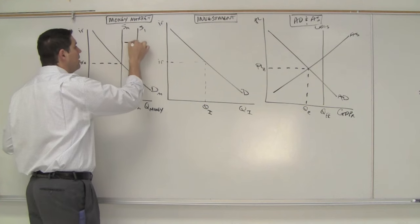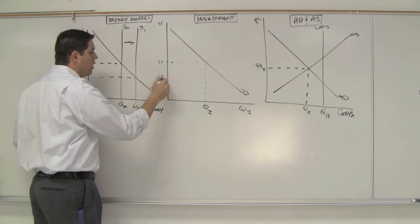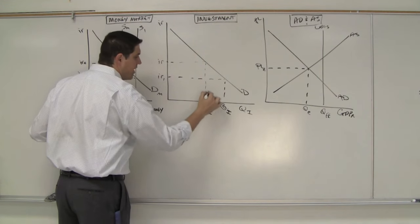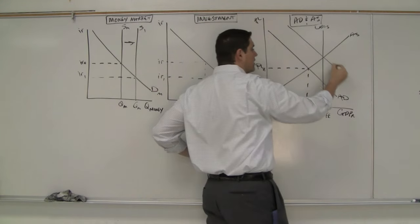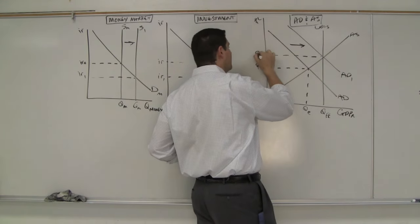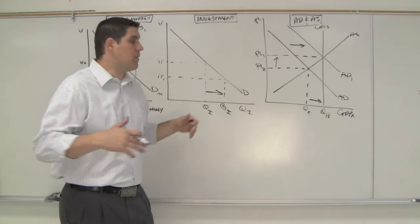Increase in money supply would lower interest rates. So we'll call this interest rate one. Interest rate one over here will lead to an increase in investment. An increase in investment would increase aggregate demand, shifting the whole curve to the right, leading to a higher price level, and leading to greater quantity. That would close the gap, and that would solve our problem.